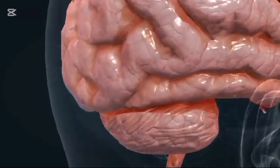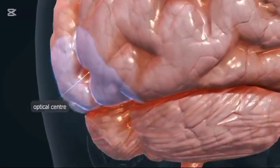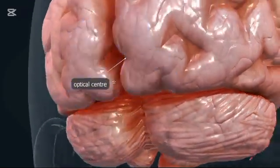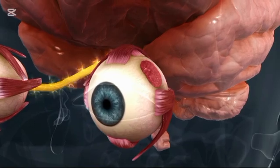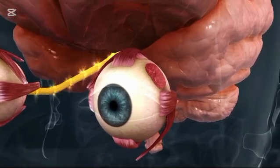The optic chiasm is a crossroads in your brain where the optic nerves from both eyes meet and partially cross. The optical center is the point in a lens where light rays pass without bending. It's the lens's focal heart, ensuring clarity and focus.